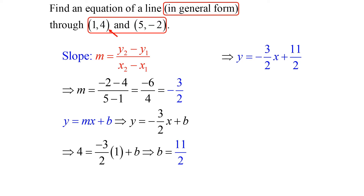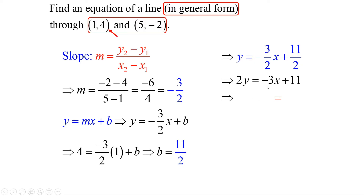Let's get rid of those fractions. The denominator is 2, so multiply everything in this equation by 2: 2 times Y gives 2Y; negative 3 halves X times 2 gives negative 3X; and 2 times 11 halves gives 11. One more step — we need X and Y on the same side, and the coefficient of X has to be positive. So we add 3X to both sides to get 3X plus 2Y equals 11.